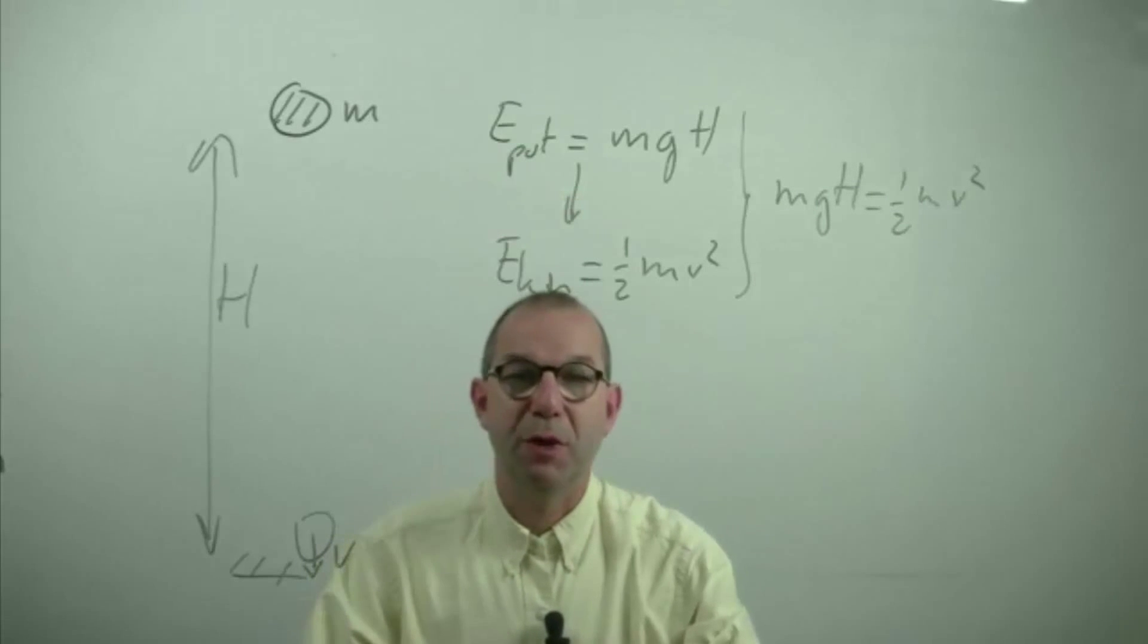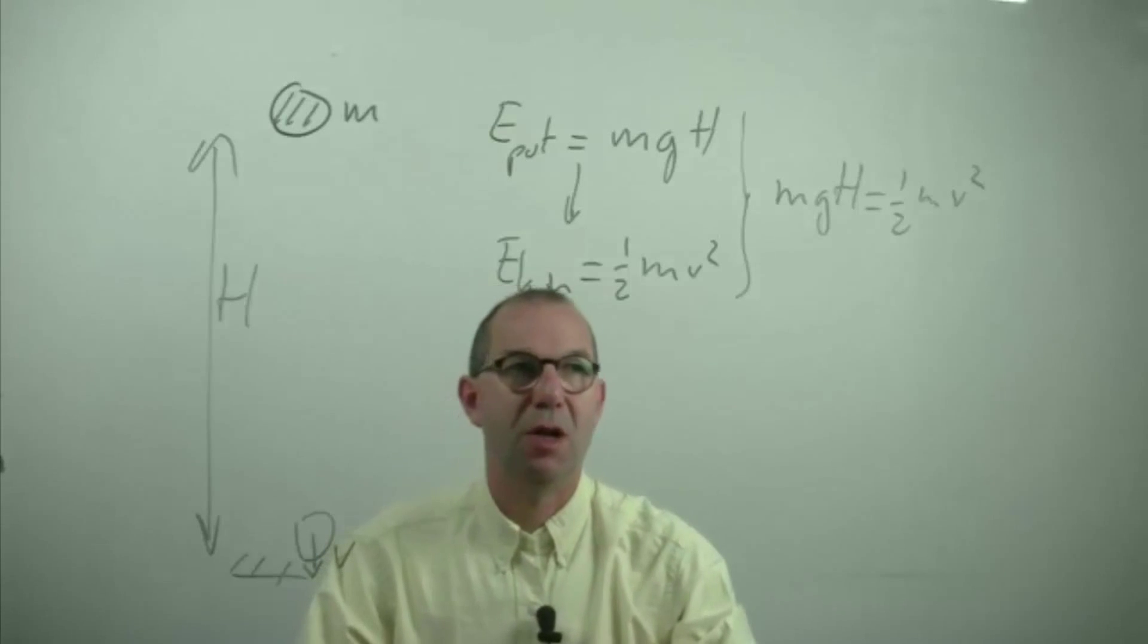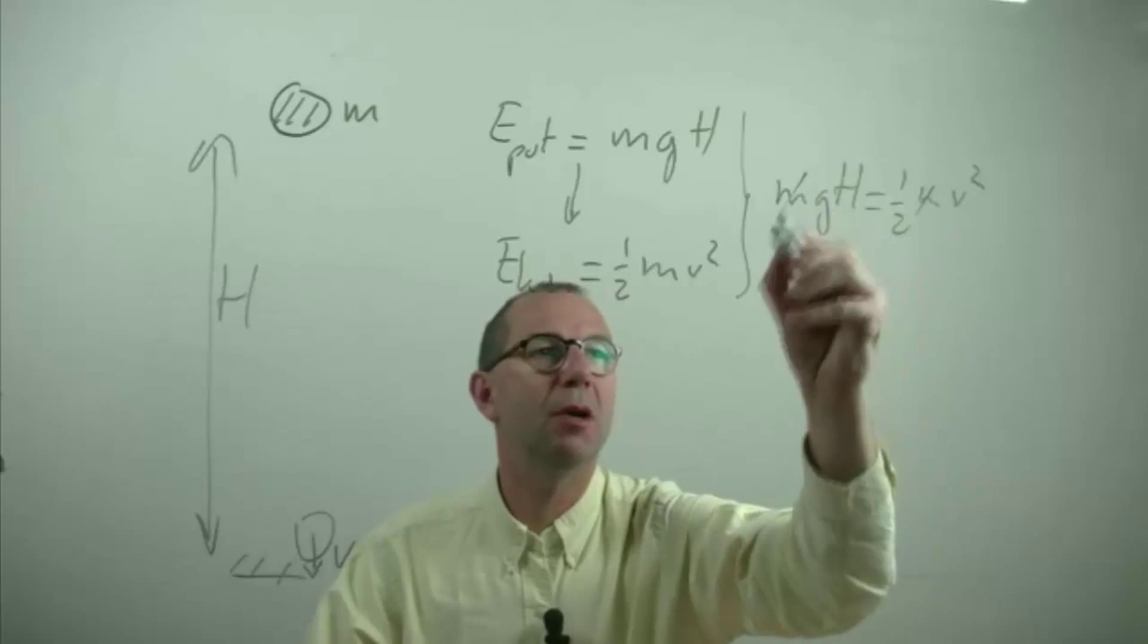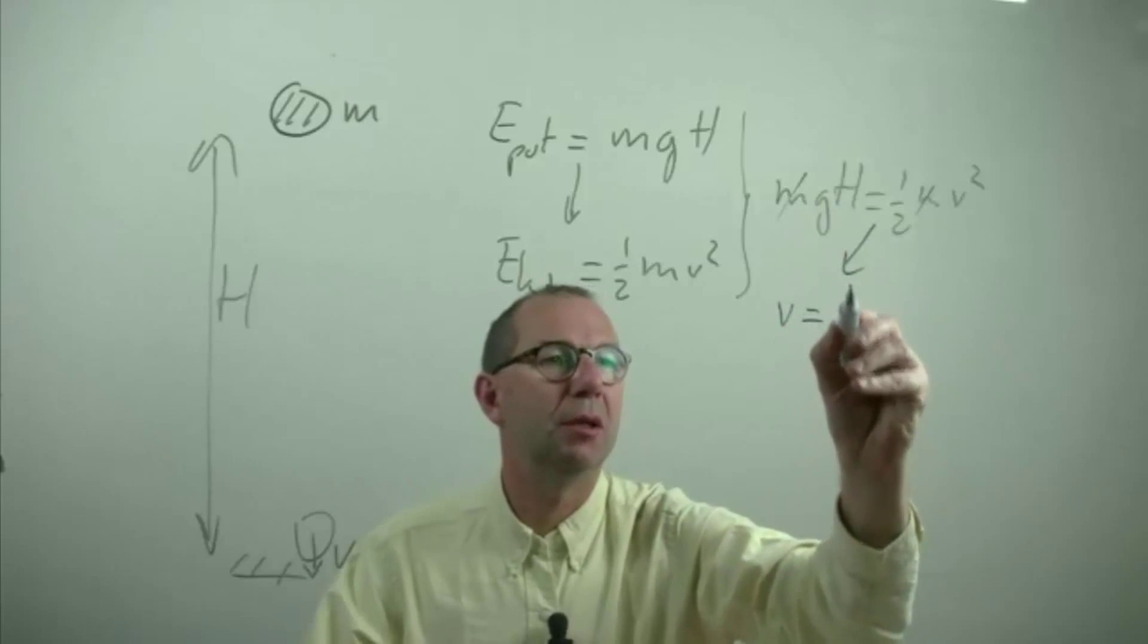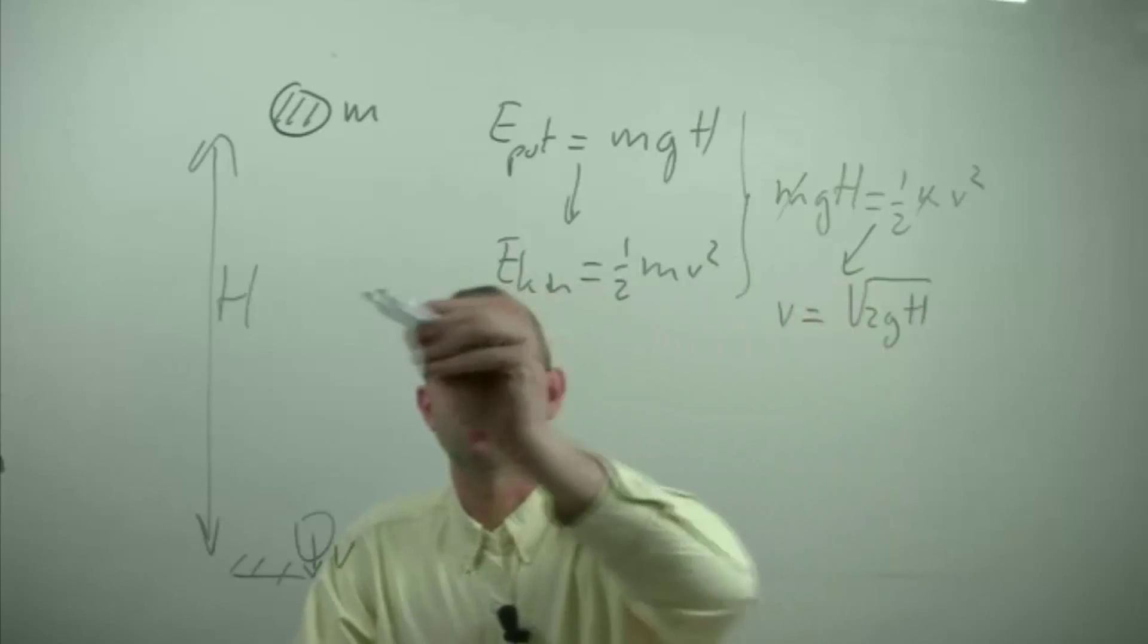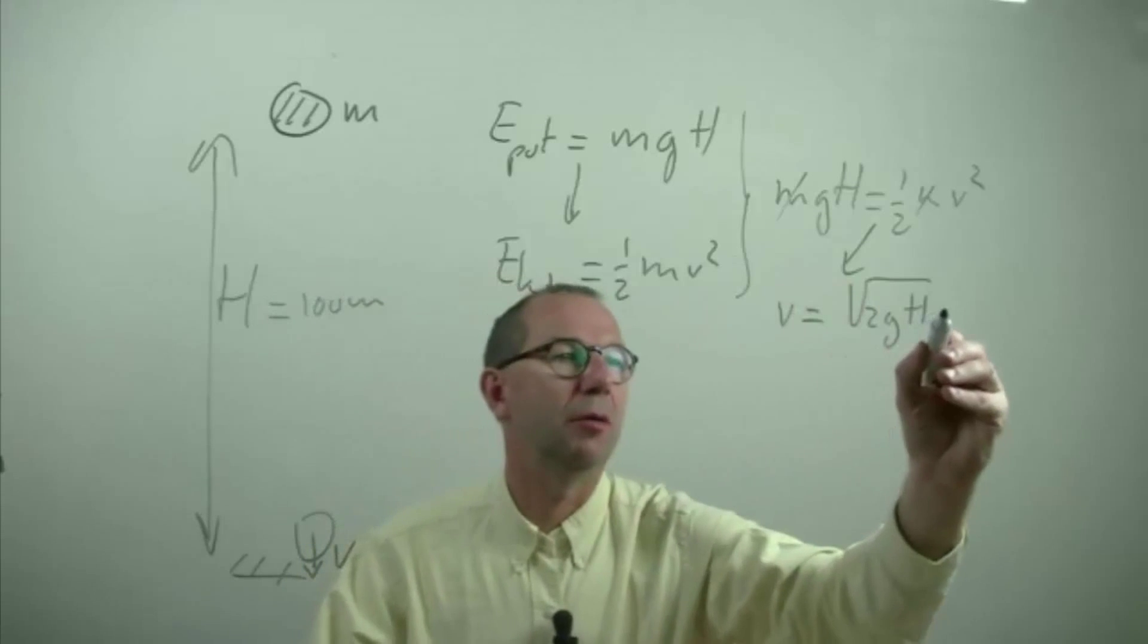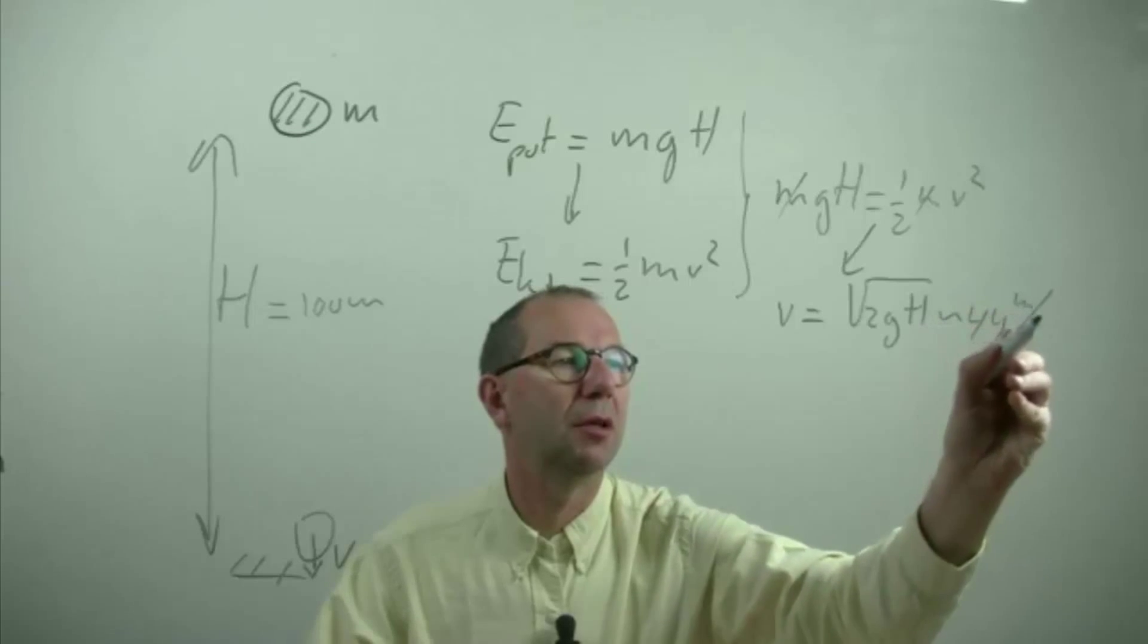This is obviously a simplification as we ignore any frictional effects when our mass comes down. But if we do so we see that we can scratch out the mass and that we can solve easily for the velocity. V will be square root of 2g times the height, which if you take for instance 100 meters will give you about 44 meters per second.